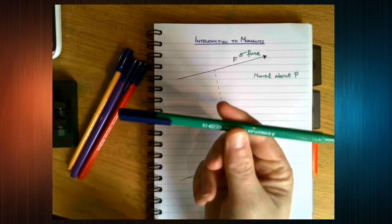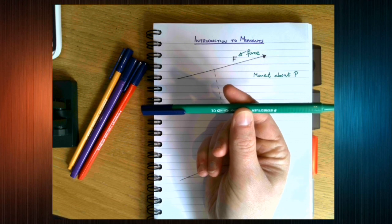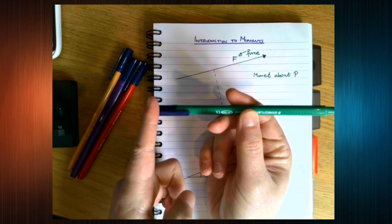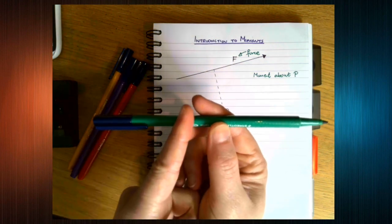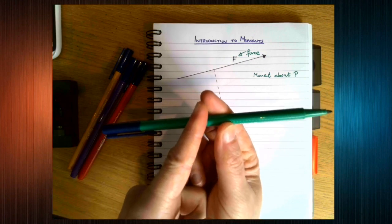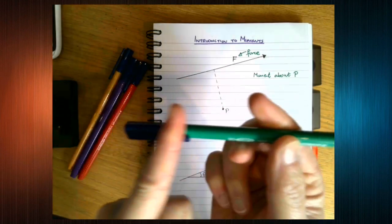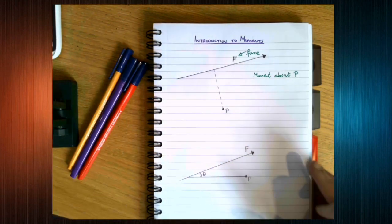Now, if you think about sitting on a seesaw, maybe from the playground when you were a child. You think, if I sit at the end, the seesaw moves really easily. If I sit towards the middle, towards the pivot, it doesn't move so much. So the distance you are away from the pivot is important.